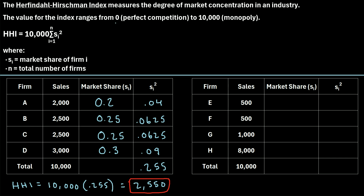We mentioned earlier that the index ranges from 0, representing perfect competition, to 10,000, representing a monopoly. So we can see that 2,550 is closer towards the perfect competition side. That makes sense because the sales of each firm are roughly similar to each other — there's not one firm completely dominating the market, so it makes sense that this index value is closer to 0 than to 10,000.